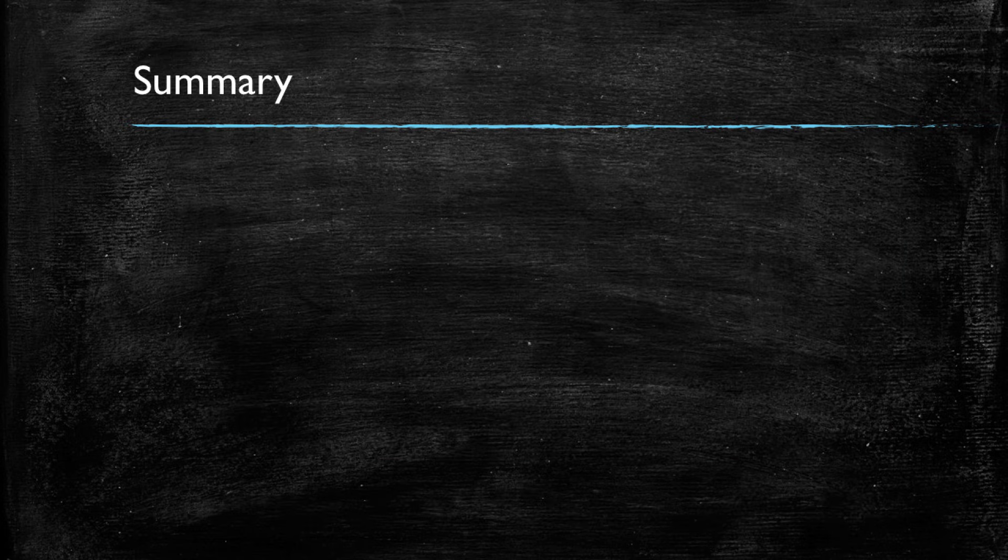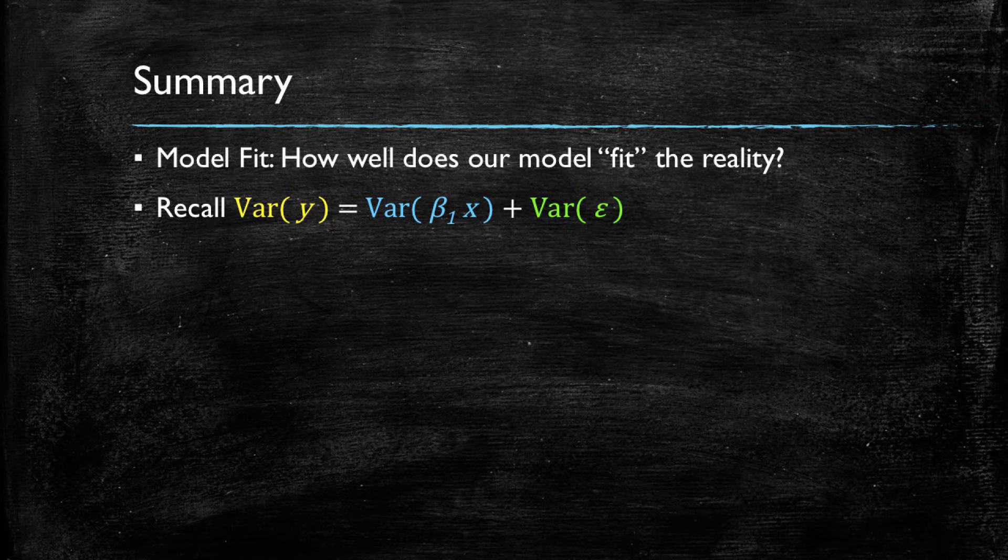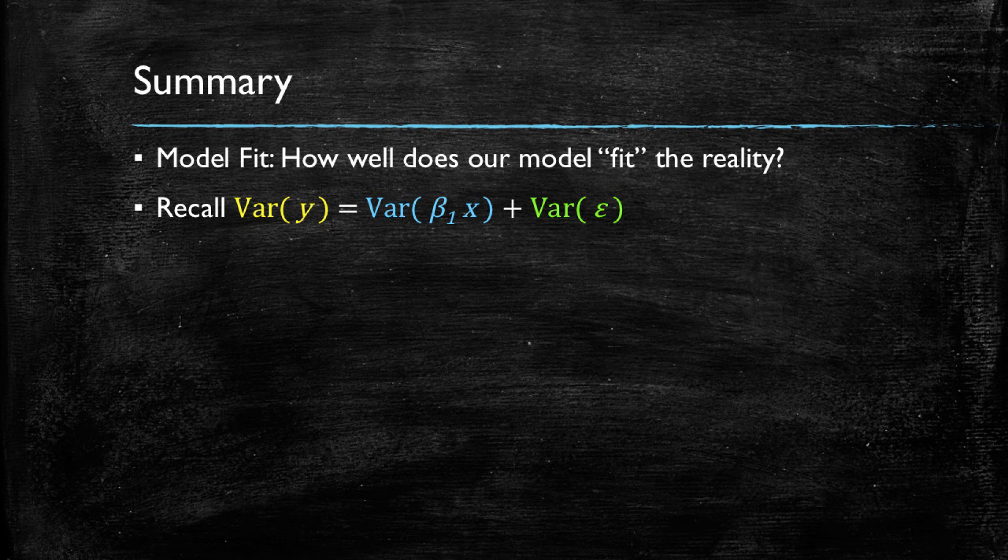Let's summarize. By model fit, we're talking about how well does our model fit the reality. And in general, what we want to do is explain the variance in the dependent variable, explain the variance in y. There's a portion of our model that leverages the variance in the x's that explains this variance, but we also have a variance in the error term, which is the unexplained portion of the variance.